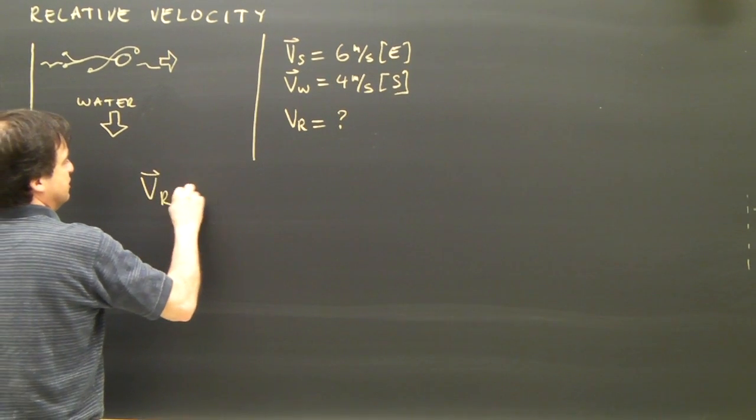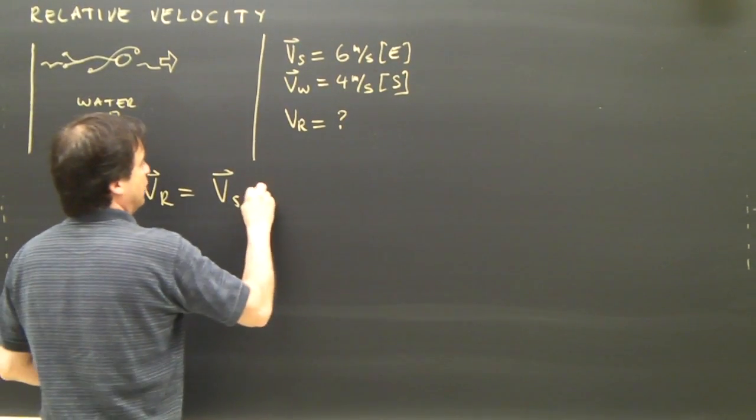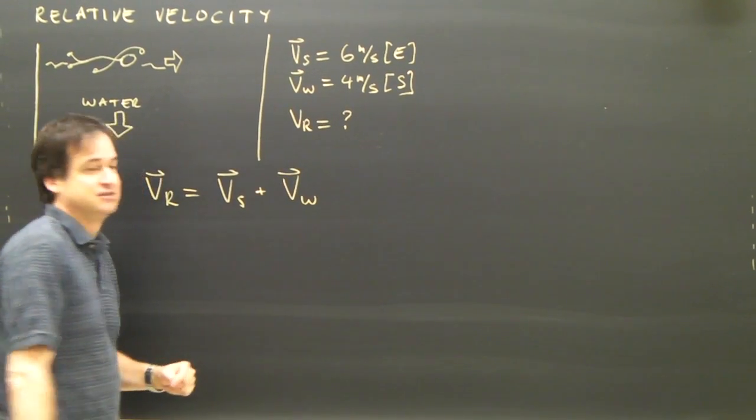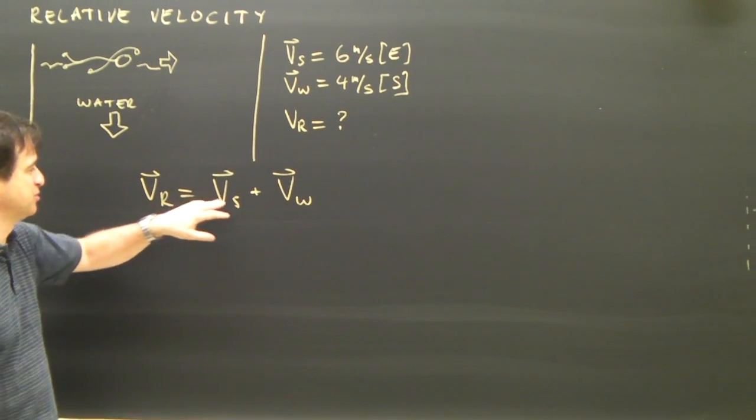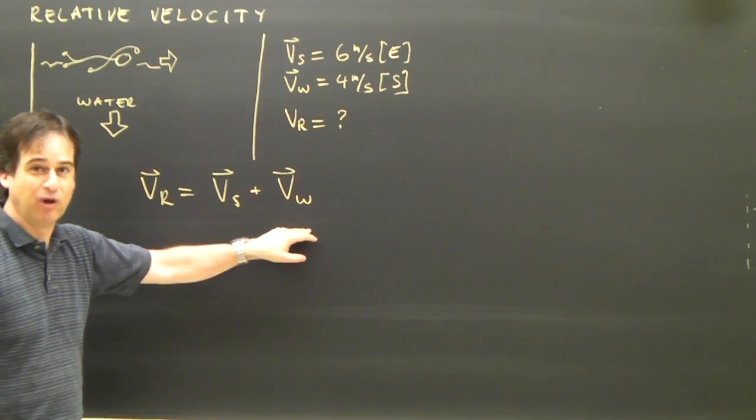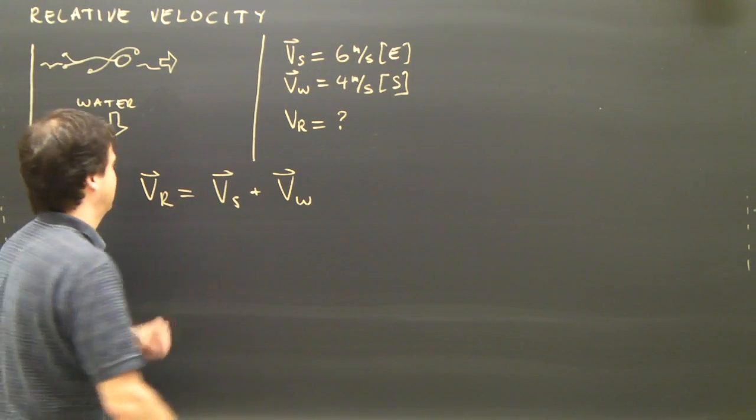So I come up with an equation. The resultant is equal to the swimmer—he's moving in the water—plus the water is moving. So there's my equation. Whatever happens to the swimmer is the result of the swimmer moving and the water moving. So if I add these two up, it will tell me what the result is.